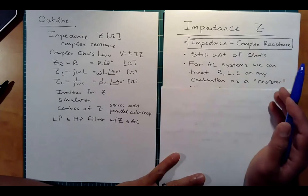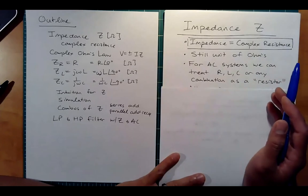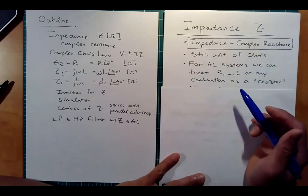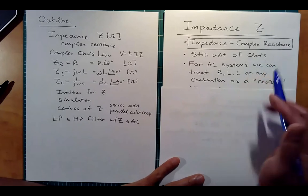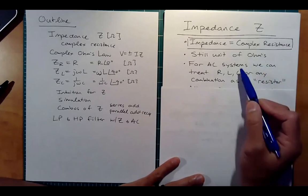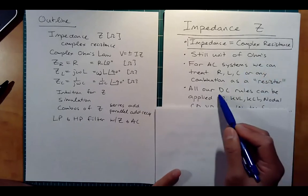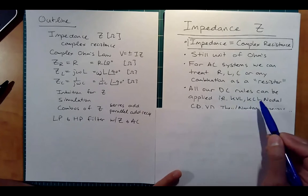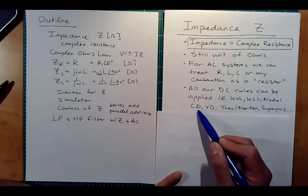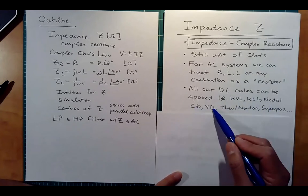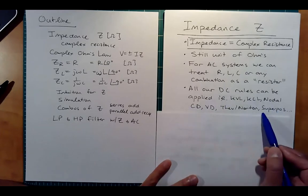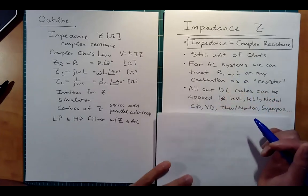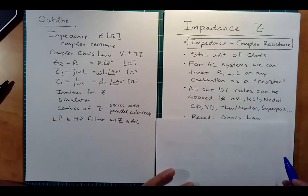We don't have to worry about V equals L·dI/dt, I equals C·dV/dt, and writing all these cosines out. We get to stay back in our original world where all our DC rules can be applied: KVL, KCL, nodal, current divider, voltage divider, Thevenin, superposition — all these things come back. But we're now in the phasor world.